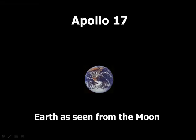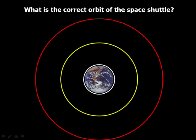Well, here's a picture of the Earth as seen from the Moon, taken by Apollo 17. Which of these circles would best represent the orbit of that space shuttle?